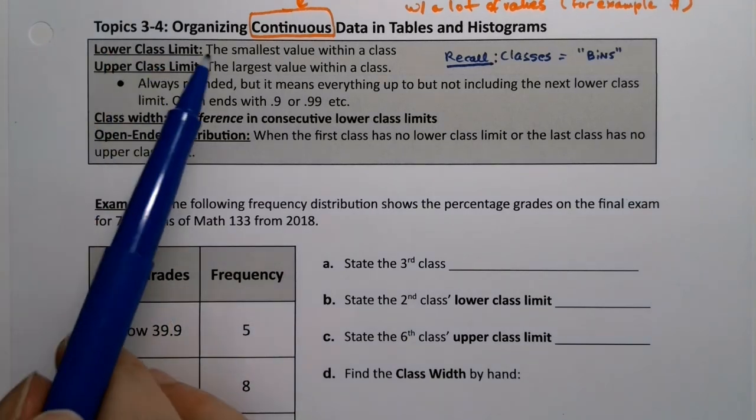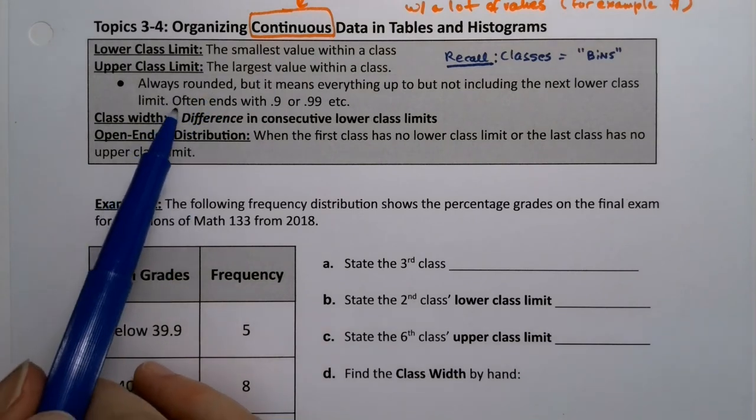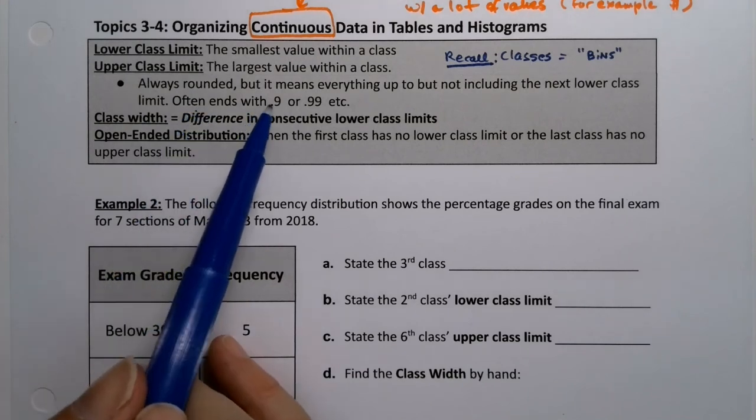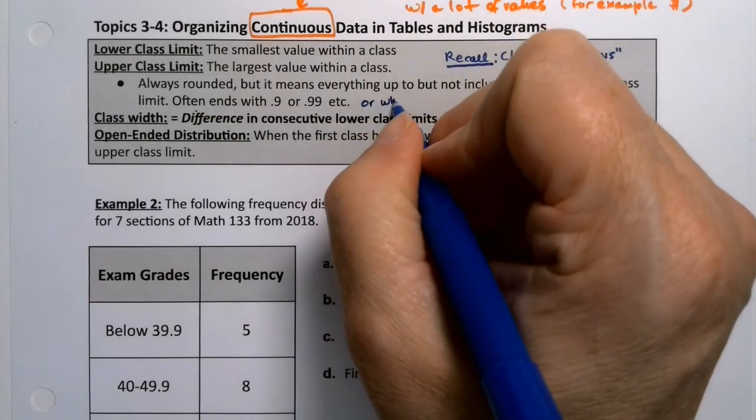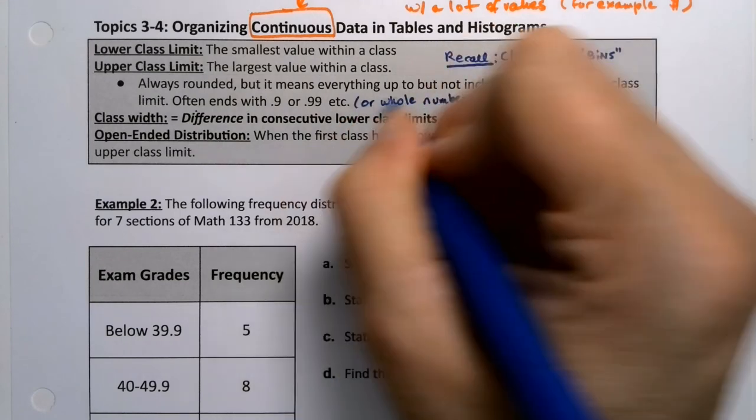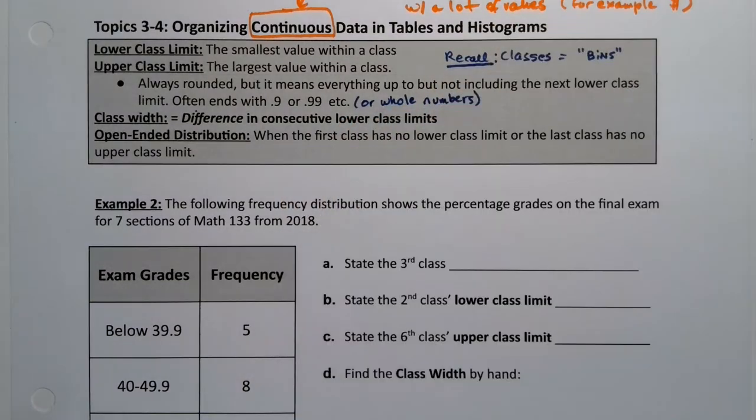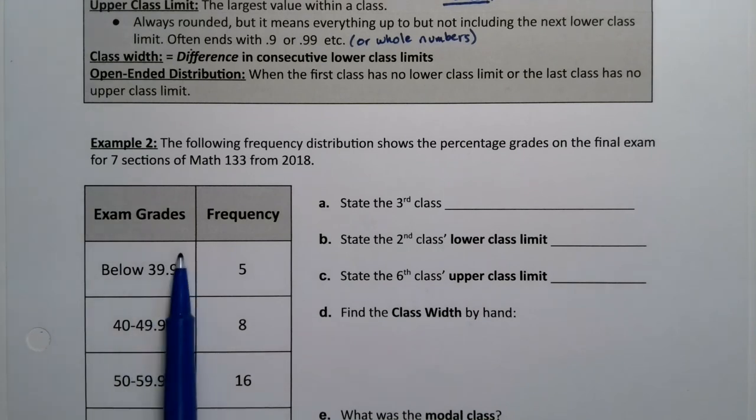Now, because it's continuous data, we always round it. So that means that we can round to the nearest whole number. That's pretty common. Or we'll end it in 0.9 or 0.99 or 0.999. I will say or whole numbers, that does sometimes happen as well. If you look down here below, you can see these classes are ending in 0.9. See 49.9, 59.9. And technically, that wasn't even really possible for this data set. So we could end them in 49 or 59 or 69 and so on.